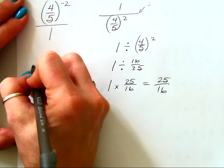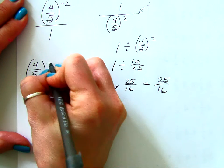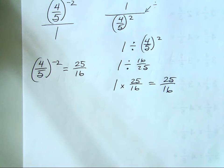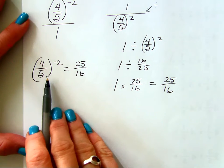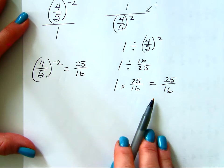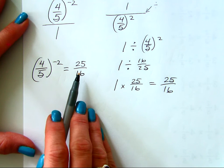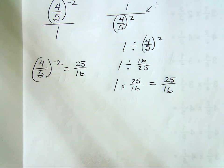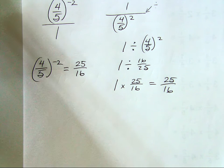So I went from 4 fifths to the negative 2 power and my answer was 25 over 16. Is there a shortcut I can apply to this? Here's the deal with fractions raised to a negative exponent — it's going to be a huge shortcut for you.